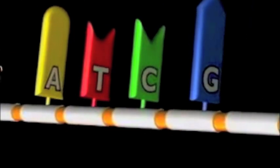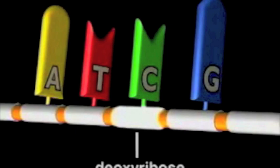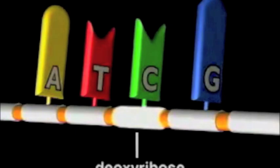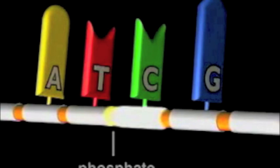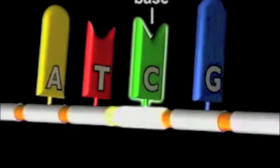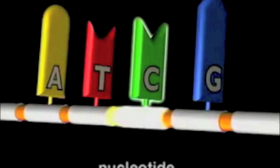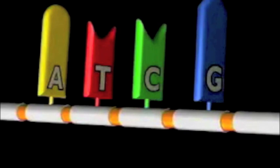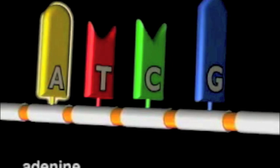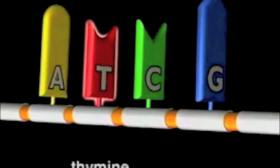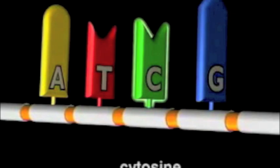The rungs of the ladder, which join the two sides or strands together, are made up of pairs of bases called adenine, thymine, cytosine, and guanine. These are referred to by letter: A, T, C, and G.